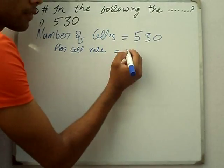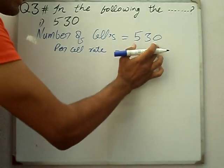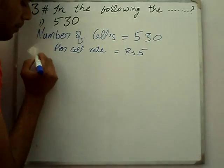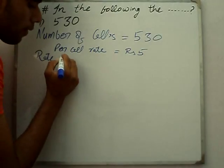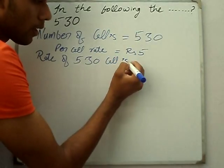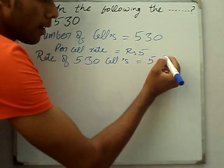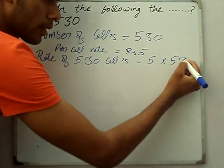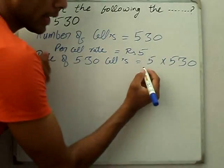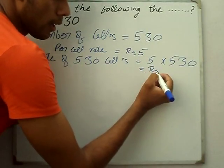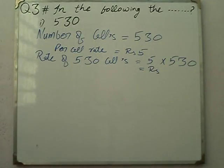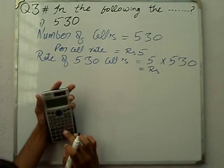Rate of 530 calls: 5 multiply by 530. When we multiply this, it comes in Rs. 5 multiply by 530 equals Rs 2650.